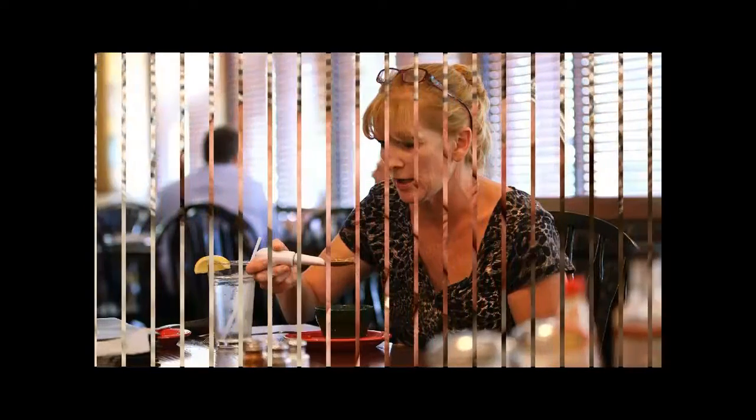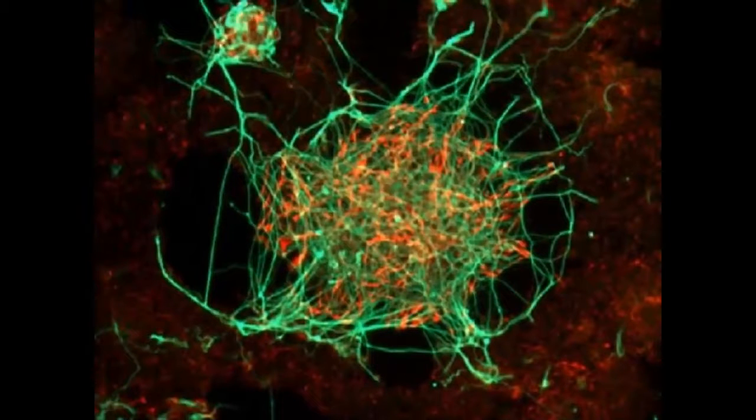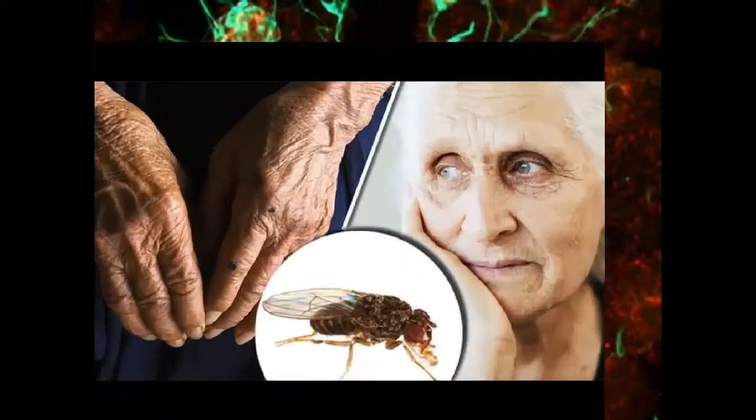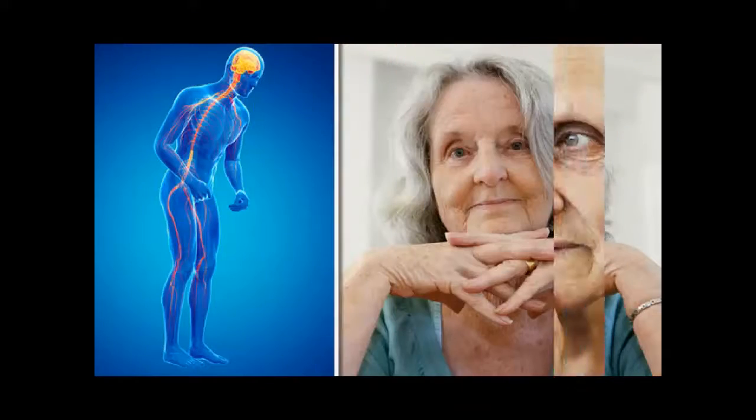Professor David Dexter, deputy director of research at Parkinson's UK, told the Daily Mail that drugs which can switch the PINK1 Parkin pathway back on may be able to slow, stop, or even reverse nerve cell death, not only in people who have rare inherited forms of the condition but also those with non-inherited Parkinson's.